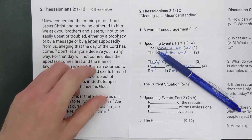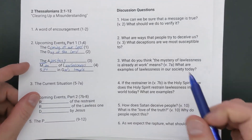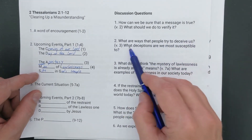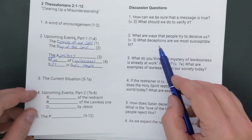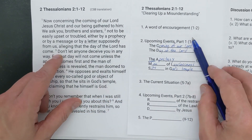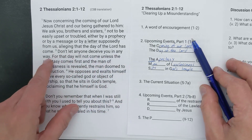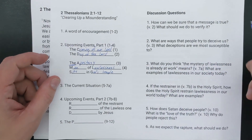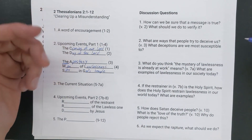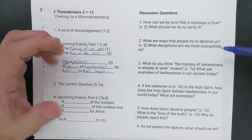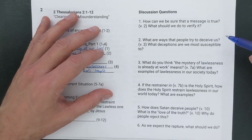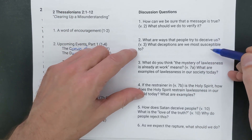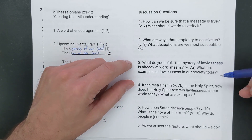Another discussion question: what are ways that people try to deceive us? What deceptions are we most susceptible to? In verse three we're exhorted not to let anyone deceive us in any way. What kinds of deceptions do we face? One theme: if there's something we want now rather than in God's timing, that can lead us to be deceived and pursue things outside of God's plan. We remember original sin — Adam and Eve wanted to know good and evil and be like God. They did get that knowledge, with horrible, tragic consequences we're still dealing with today.